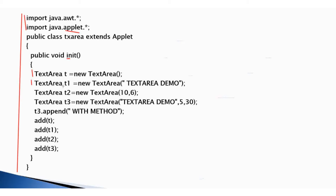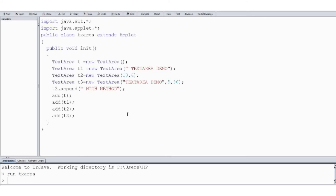Here we create a TextArea with two integer parameters where 10 is the height and 6 is the width. The fourth TextArea is created with one initial string and specified height and width. Here we append a string to the fourth TextArea, and here we add all components to the applet.